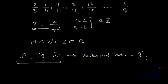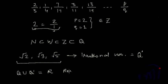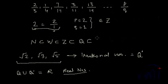The set of irrational numbers, Q dash, is actually a complementary set of the set of rational numbers. Together — that means the set of rational numbers union the set of irrational numbers — these are called real numbers, represented as R. So natural numbers is a proper subset of whole numbers, whole numbers is a proper subset of integers, integers is a proper subset of rational numbers, and rational numbers is a proper subset of real numbers.